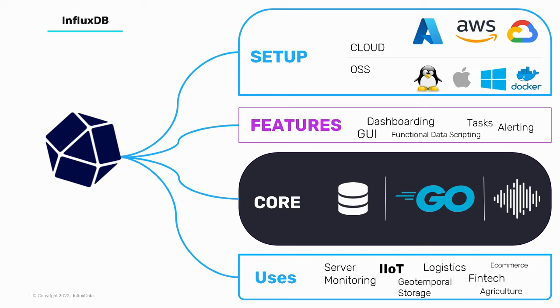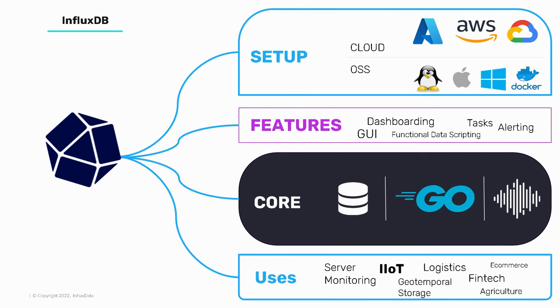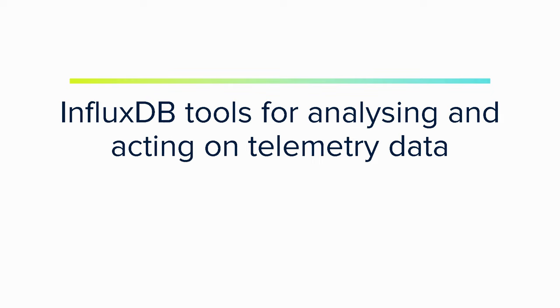It's extremely fast — we can ingest around 250,000 data points per second. We're about four times faster than NoSQL databases and about five times more efficient at storing data than NoSQL databases. Our uses vary; in this context we're talking IoT and industrial IoT, but they cover a large demographic of use cases. Now let's get to the meat of the presentation: InfluxDB tools for analyzing and acting on your telemetry data.